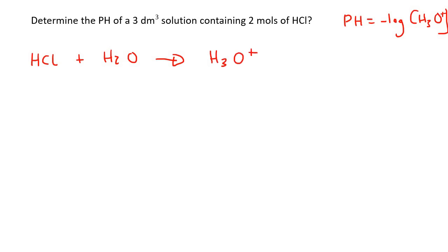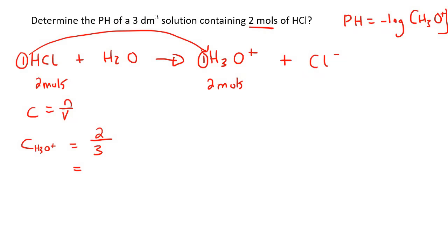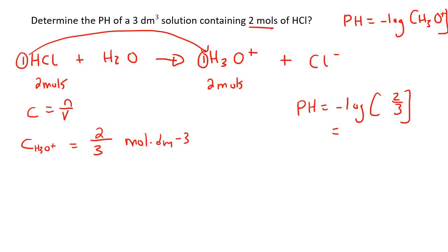So we write that reaction down, which we've been practising a lot. We know the moles of HCl — that's two moles. If we look at the ratio, it's one-to-one, so that means the moles of H₃O⁺ is also two moles. Using C = n/V, the concentration of H₃O⁺ is two over three mol·dm⁻³. So pH = −log(2/3), which gives us 0.18 rounded to two decimal places.